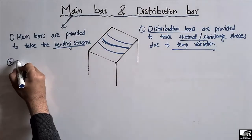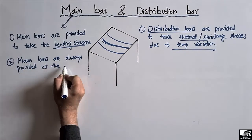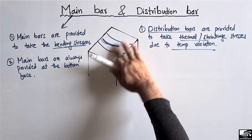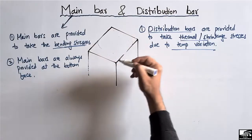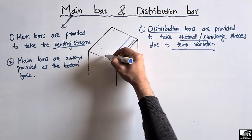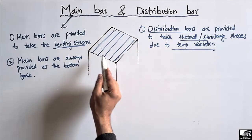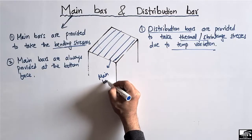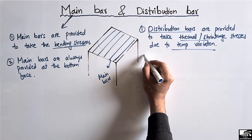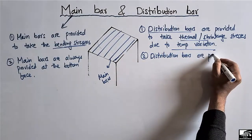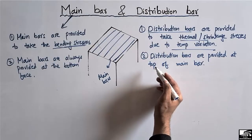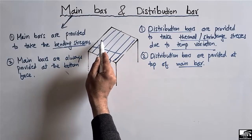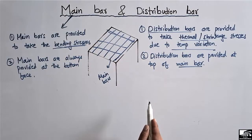The second difference is: the main bars are always provided at the bottom face. If I consider this is the slab, main bars should always be provided on the bottom face — let's consider these are the main bars. While on the top of these main bars, we provide the distribution bars. So the main bars are placed at the bottom face of the slab, while the distribution bars are provided on the top of the main bars.